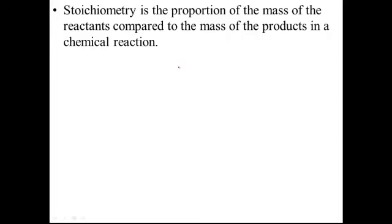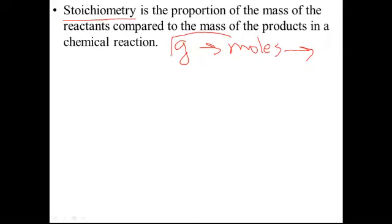So what is stoichiometry? It's actually not too bad. As we've already learned, if you have the grams of a substance and you need to convert it to the moles of a substance, you can use the molar mass from the periodic table to go from grams to moles. Now what we're going to do is basically take another step — the stoichiometry step. This part we've already learned; now we're just going to take it one step further.